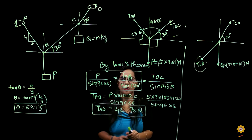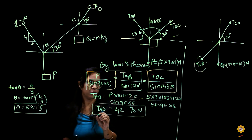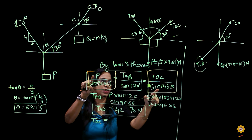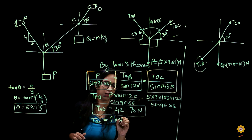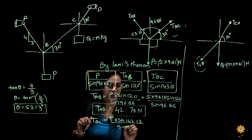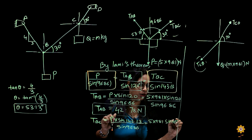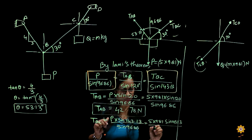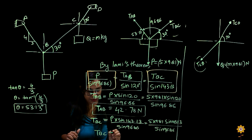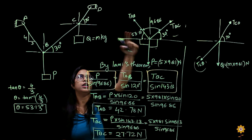Now I have the value of TAB. For TBC, using Lamy's theorem: TBC equals P into sine 143.13 upon sine 96.86, where P is 5 into 9.81, sine 143.13 upon sine 96.86. Calculating this gives TBC equal to 27.72 newtons as the tension in chord BC.